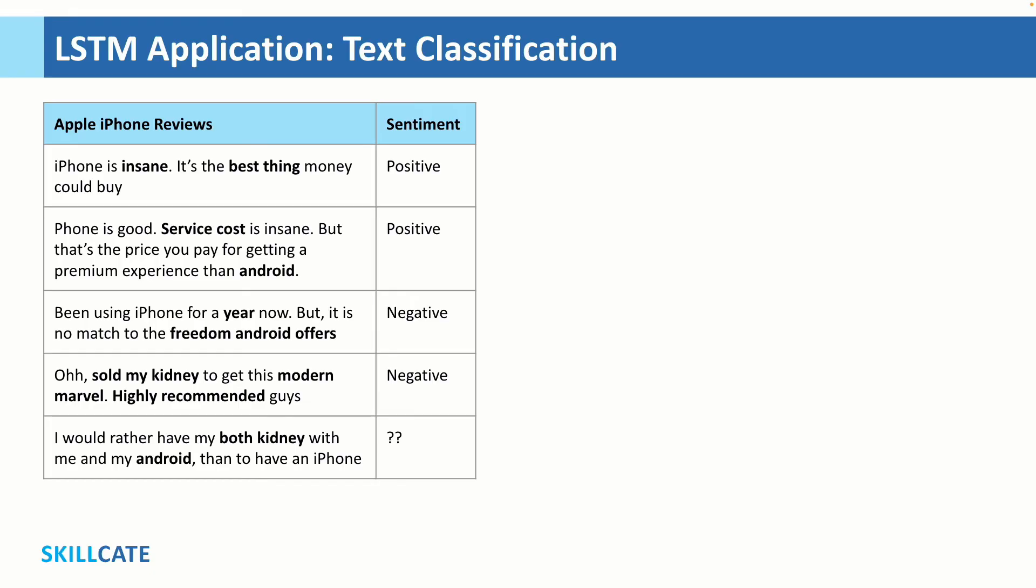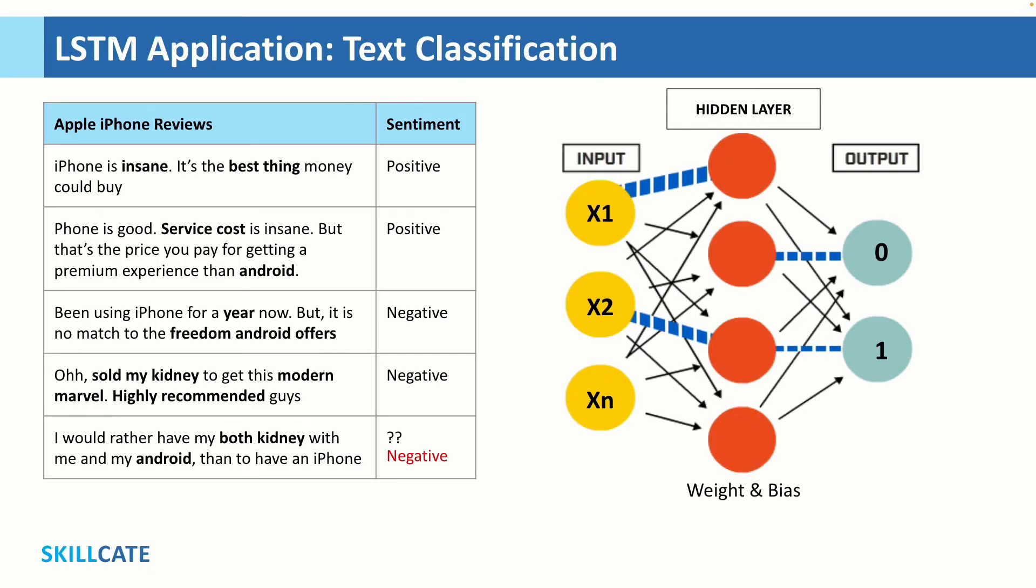Now, once the model is trained, the specific neurons in the hidden LSTM layer may specialize on detecting the kidney sarcasm, the positive-negative comparison to Android, or the value for money part that iPhone brings. And when a new unseen review is fed for prediction, the model may tell the review is full of sarcasm and is clearly favoring Android over iPhone and is a negative review.